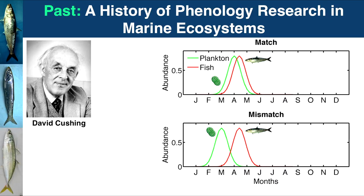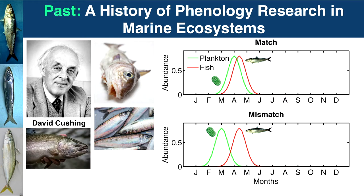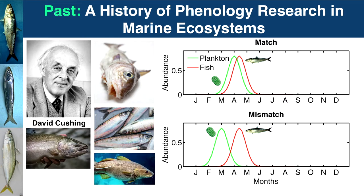However, in some years things don't work out as the fish planned — they might reproduce too soon or too late and miss the plankton bloom, resulting in the inverse situation with lower fisheries production. This has been studied since the 1970s, and some research goes back even further. Species shown to exhibit these dynamics include commercially important ones such as cod, salmon, and herring.